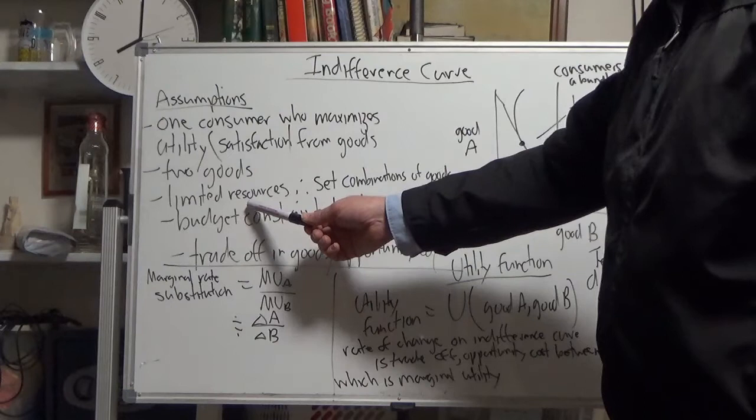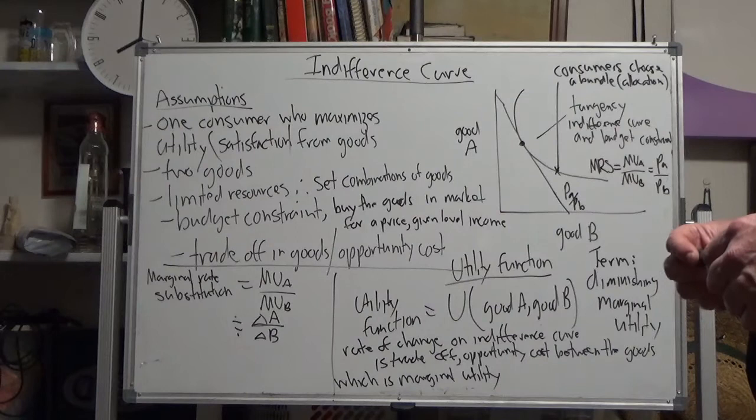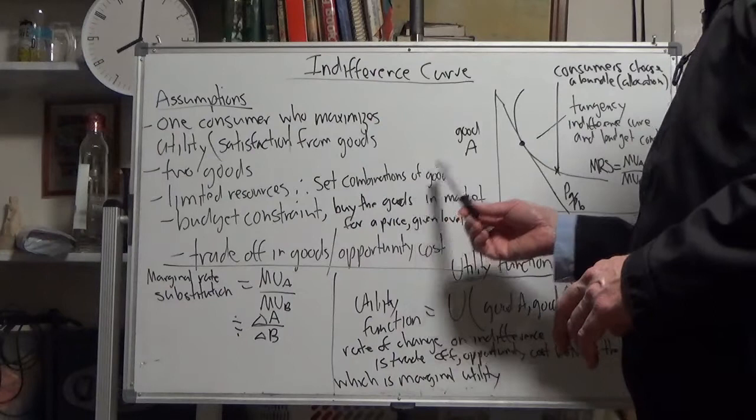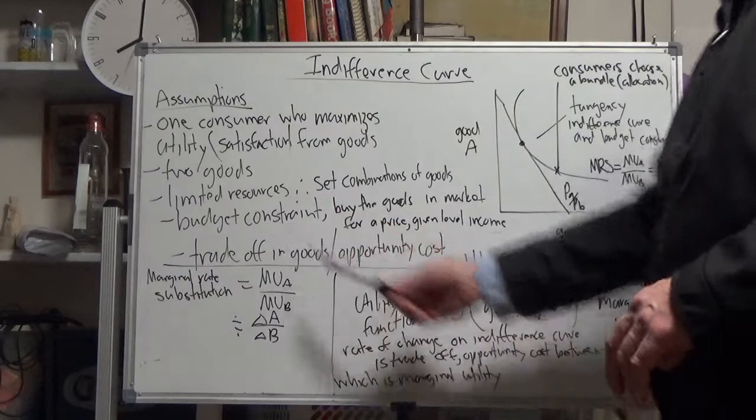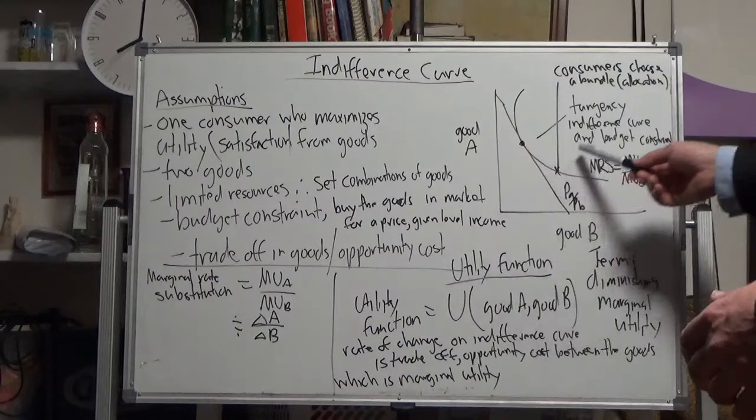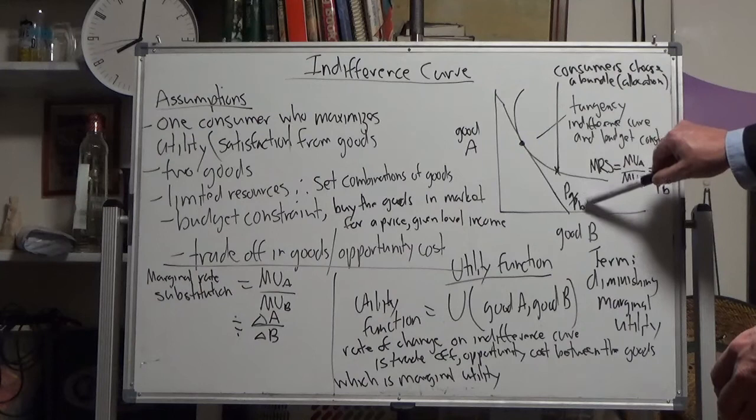Another assumption is there's limited resources, one of the key assumptions of economics. Therefore, you can make set combinations of goods on the indifference curves. There's a budget constraint, so you buy goods in the market for a price given your income level, and that straight line is the price ratio of the two goods, price A over price B.